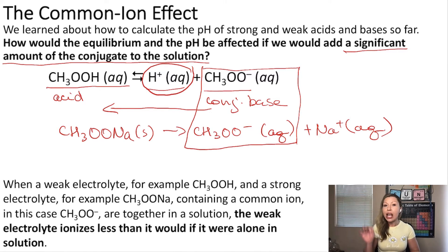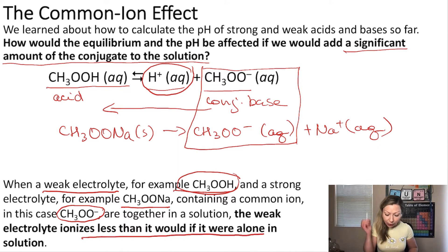Let's summarize. When we have a weak electrolyte, in this case acetic acid, and a strong electrolyte, for example sodium acetate, containing a common ion, in this case the acetate ion, together in a solution, the weak electrolyte will ionize less than if it were alone in the solution.